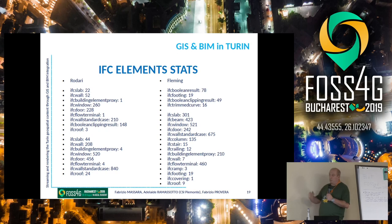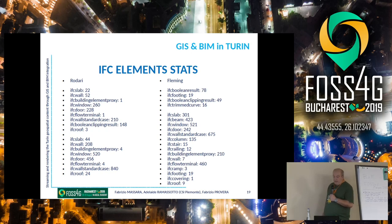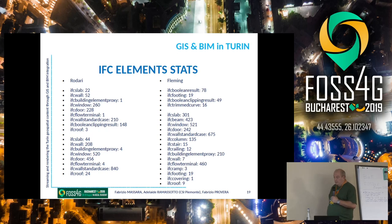This slide shows the different kinds of elements present in the two models I showed you — Rodari and the Fleming Kindergarten. For example, there are 22 slabs, 52 walls, 260 windows, doors, etc. Every one of these elements needs a dedicated procedure to extract the different parts — attributes and geometry — because every element has a different geometric representation.